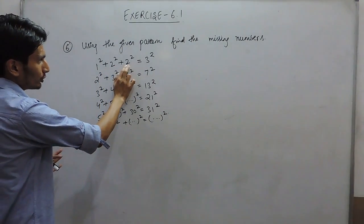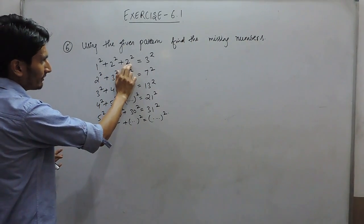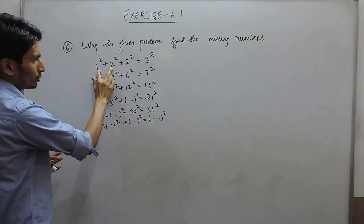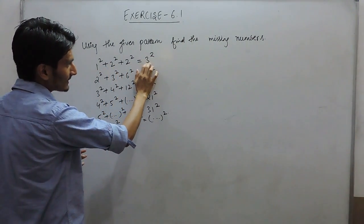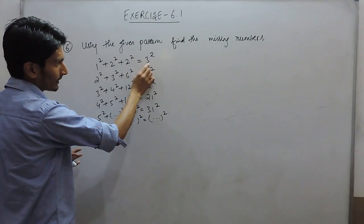On the left hand side to write the third number we are actually multiplying those 2. This 2 into 1 is 2, and on the right hand side this number is 1 more than this number.